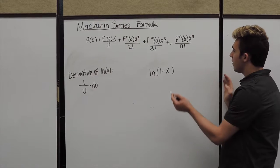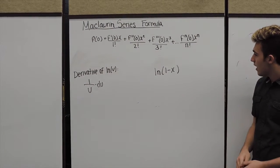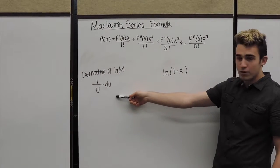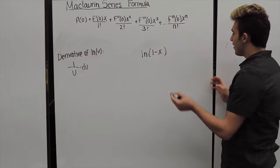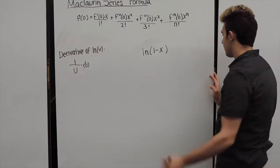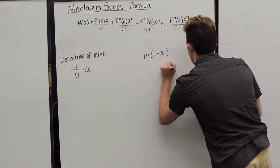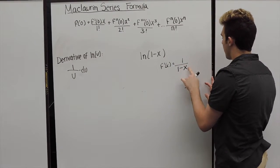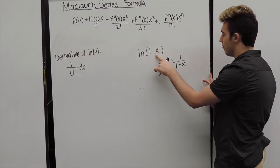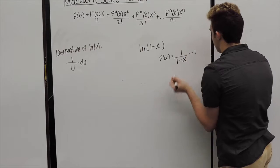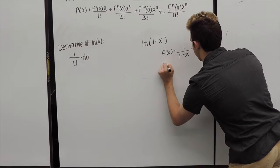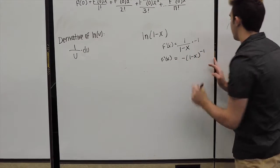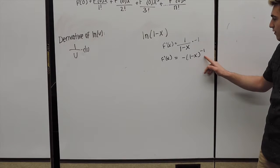So now we want to find the McLaurin for ln of 1 minus x. And in order to find our derivative value at 0, remember that the derivative of ln of u is 1 over u times du. So we have f prime of x is equal to 1 over our u value, our 1 minus x, multiplying it by the derivative of our u value, which is negative 1. So I'm going to rewrite this as f prime of x equaling negative 1 minus x raised to that negative 1 power.